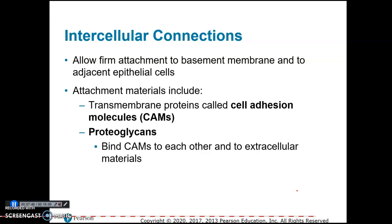Intercellular connections allow attachment from the basement membrane to underlying tissue and also attachments between adjacent epithelial cells, since they're very tightly packed together. Attachment materials include CAMs — cell adhesion molecules — and proteoglycans, which contain protein and carbohydrates and help bind the CAMs to each other.